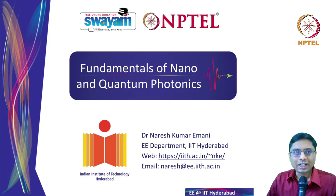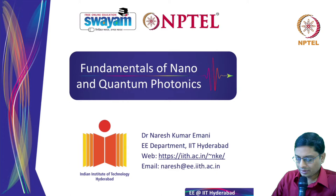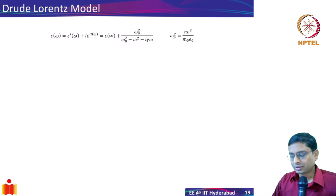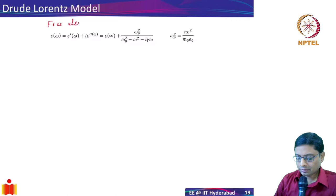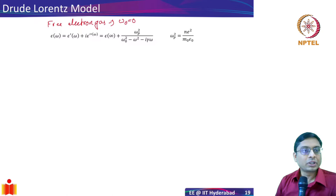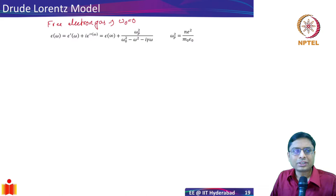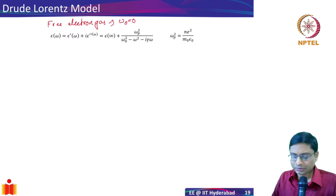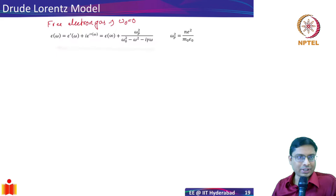Welcome back to Fundamentals of Nano Quantum Photonics. In the last lecture we looked at the Lorentz model and how it explains the optical properties of dielectrics. The Lorentz oscillator can also explain metals, because metals are composed of free electrons. We can extend that model by treating metals as a free electron gas, which means omega-naught is zero — omega-naught being the natural frequency assumed for a Lorentz oscillator. For free electrons in metals, electrons are not bound to any nucleus, so omega-naught equals zero.